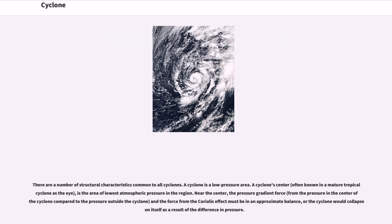There are a number of structural characteristics common to all cyclones. A cyclone is a low-pressure area. A cyclone's center, often known in the mature tropical cyclone as the eye, is the area of lowest atmospheric pressure in the region. Near the center, the pressure gradient force, from the pressure in the center of the cyclone compared to the pressure outside the cyclone, and the force from the Coriolis effect must be in an approximate balance, or the cyclone would collapse in itself as a result of the difference in pressure.